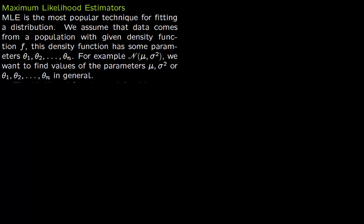We now talk about maximum likelihood estimators. Maximum likelihood estimation is a very popular technique for fitting a distribution. The idea is that you assume your data comes from a population with a given density function f. This density function will always have some parameters — say n parameters from theta_1 to theta_n. For example, you can assume your population comes from a normal distribution with two parameters: mean and variance. You want to find out the values of those parameters, or theta_1 to theta_n for a general density function.